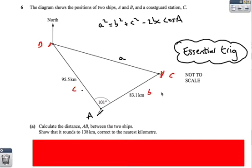So here's the first one. We're given a diagram showing the position of ships and a coast guard station. I want to find the distance AB. Now, first off, I need to decide if I'm going to use the cosine rule or sine rule.